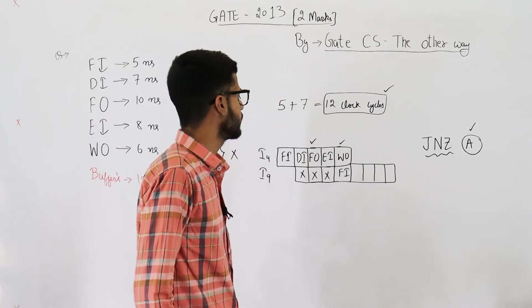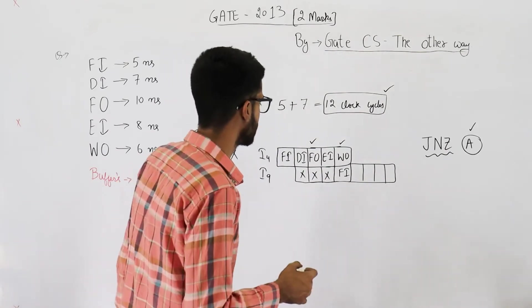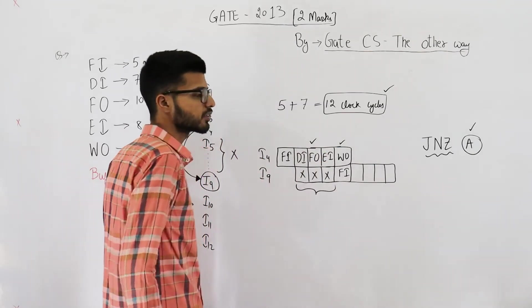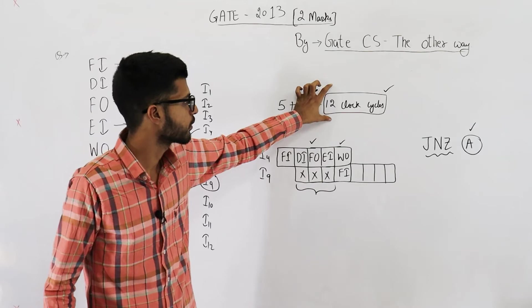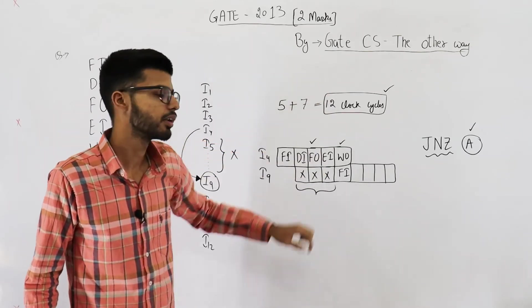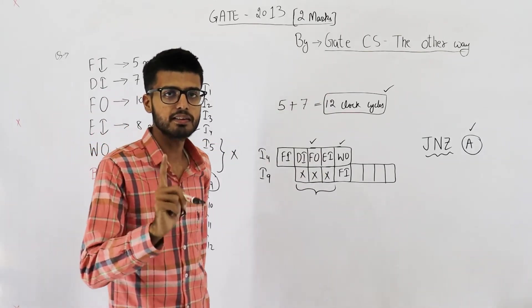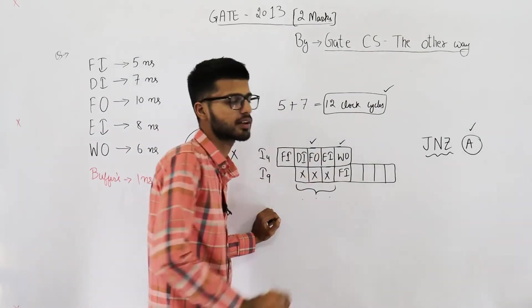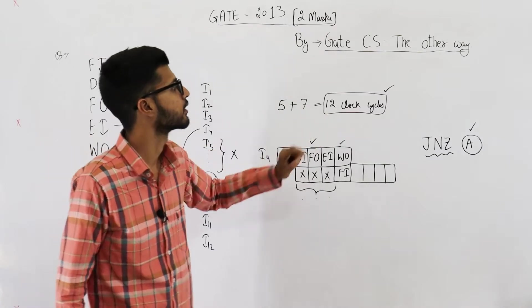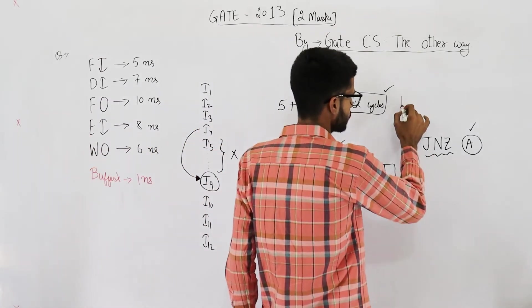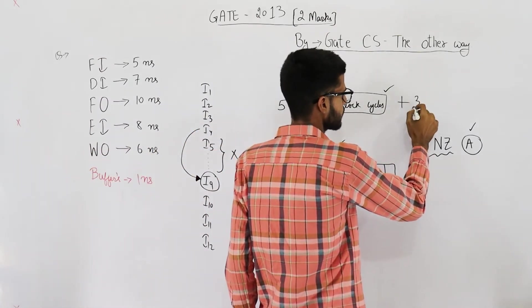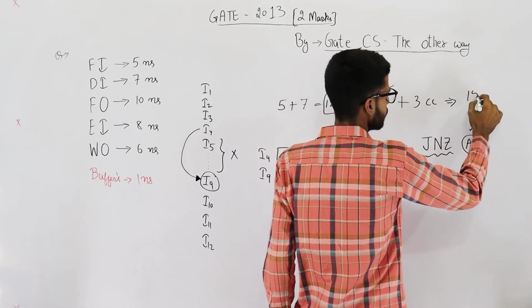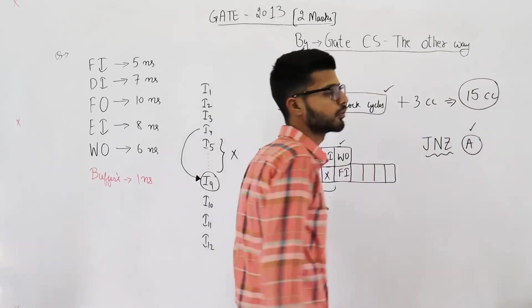Now what we need to calculate is how many stall cycles did we introduce. These three stall cycles. That means normal program takes 12 clock cycles. Program with one jump will take three more cycles. Because we didn't consider these three stalls here. So this program actually takes 12 plus three clock cycles, which comes out to be 15 clock cycles.